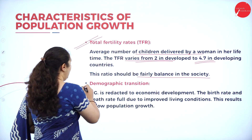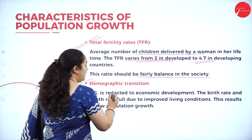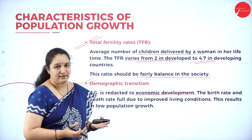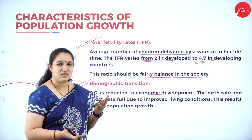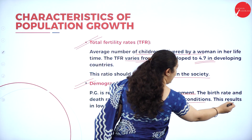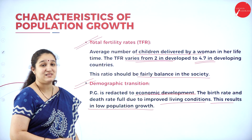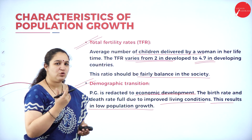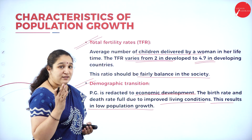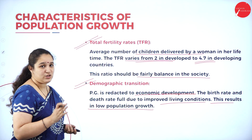Next is demographic transition. Population growth is related to economic development. The birth rate and death rate are in a balanced condition due to improved living conditions, resulting in low population growth. When population growth is very low in this way, we call it demographic transition. So the characteristics of population growth are: exponential growth, doubling time, infant mortality, total fertility rate, and demographic transition.